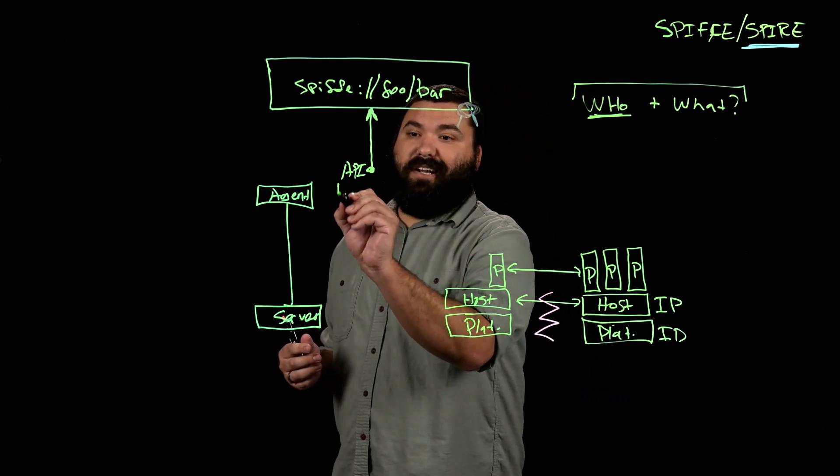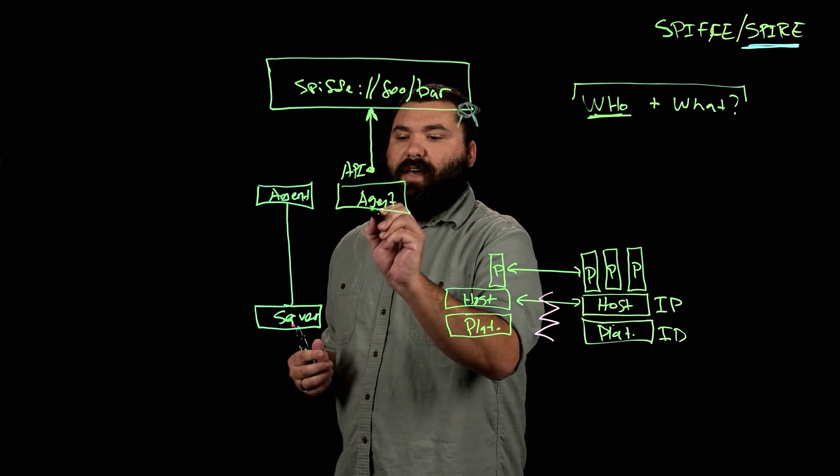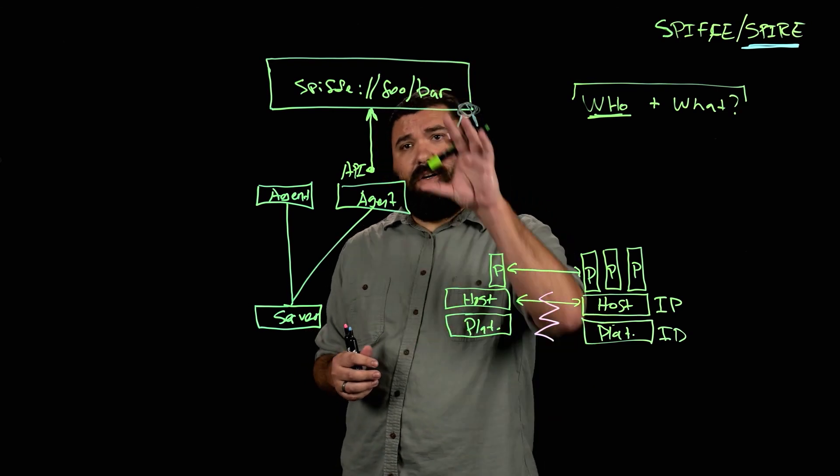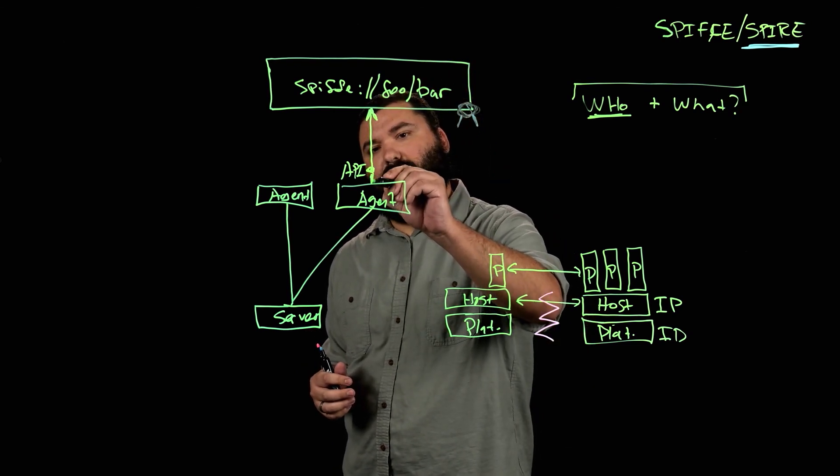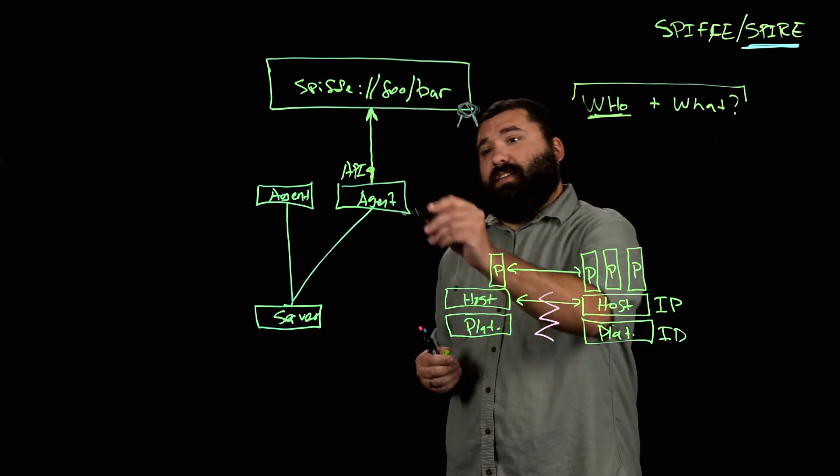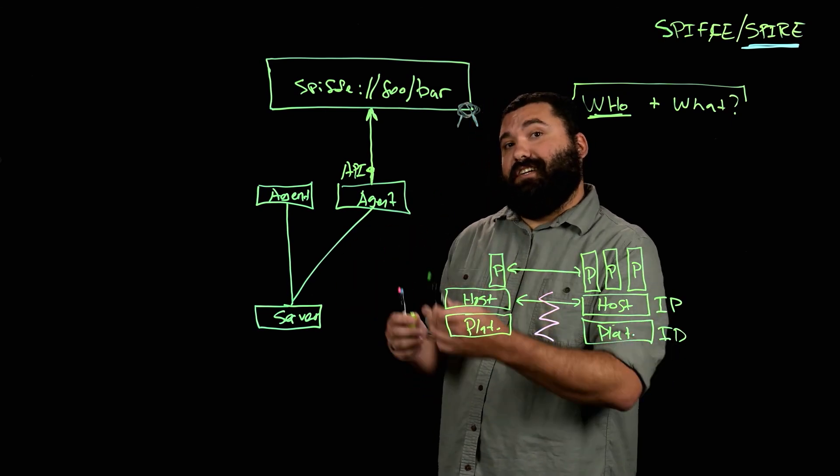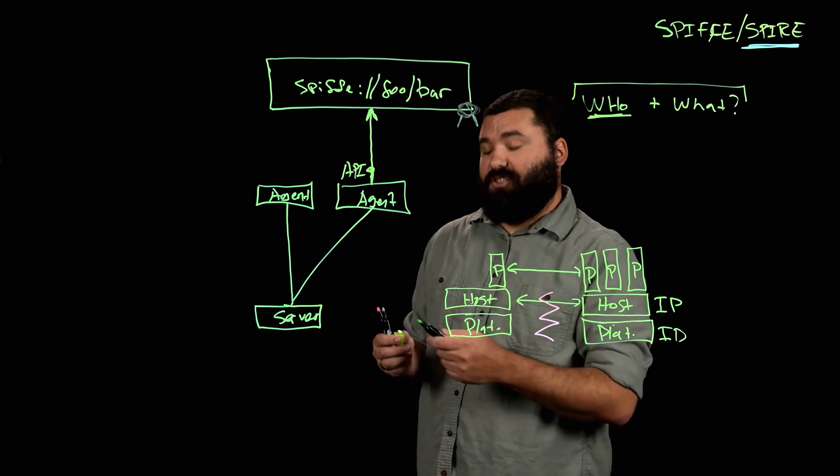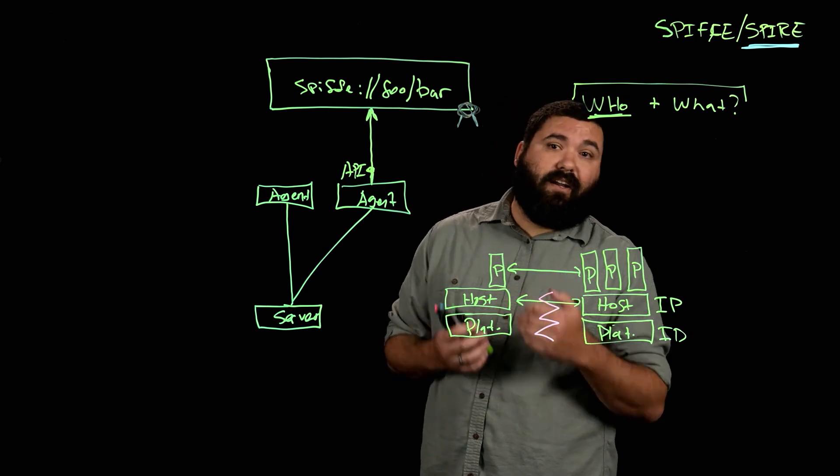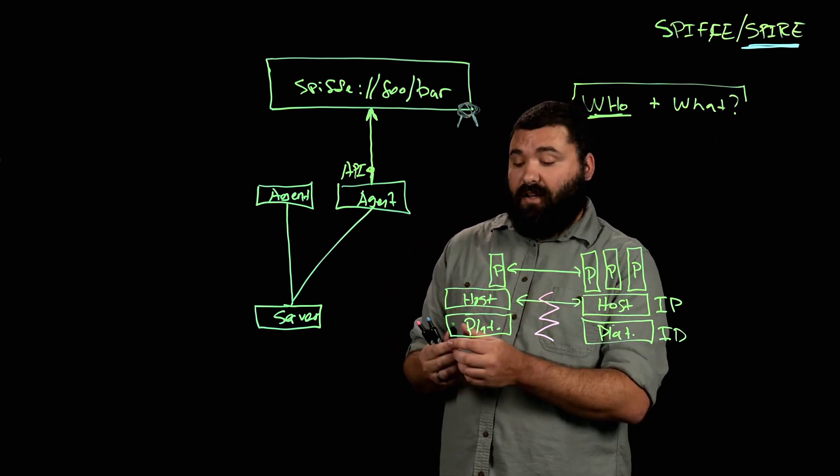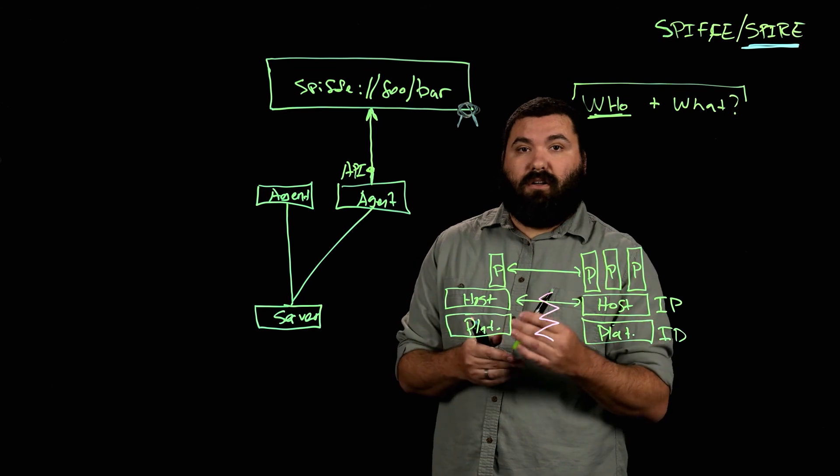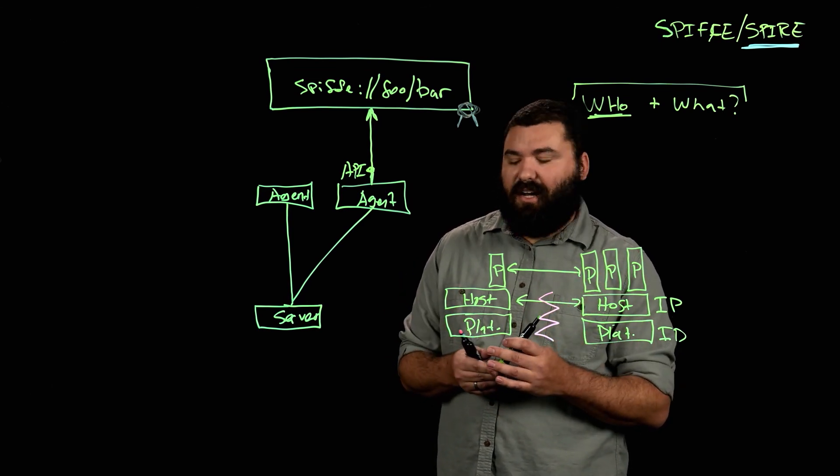When you deploy your workload for the first time, the workload talks to this workload API which the agent exposes. And the workload is able to retrieve an SVID from this workload API as well. So when these agents come up, that is the node attestation part where we are attesting the identity of the node or the agent which has just come online. And when you deploy your software, we do a similar thing where we call workload attestation. We can interrogate the operating system kernel and things of this nature to figure out the true identity of this workload which is calling it. That means that neither the instance nor your workloads need any kind of secrets injected at deploy time or anything like this.